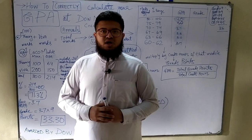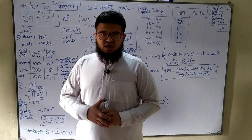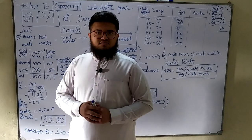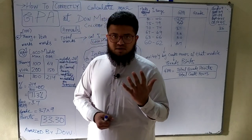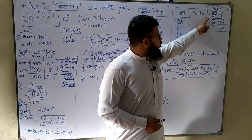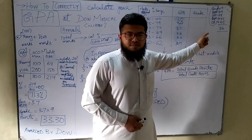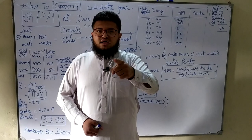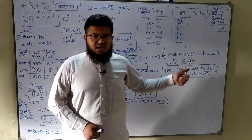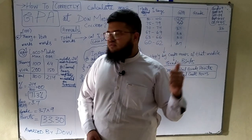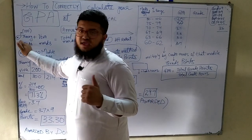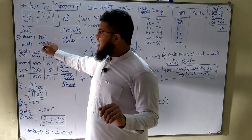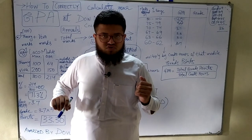Annual exams have two components: one is the theory component and the other is the viva component. The theory exam covers all five modules of the year — Foundation, Blood, Locomotor, Respiratory, and CVS — these five modules appear in the annual theory exams. Alongside, their vivas are also held. Theory exams and vivas are held at different stations. Theory has fixed marks of 100 per module, while viva marks vary for different modules.